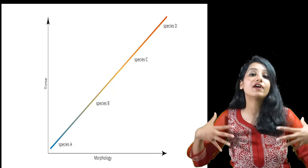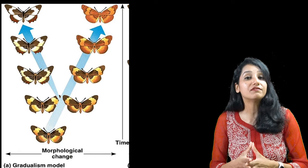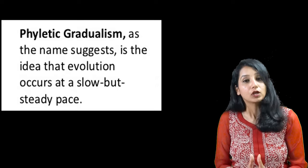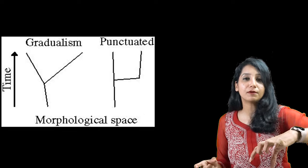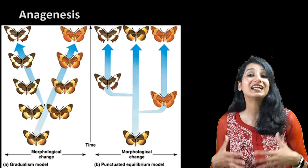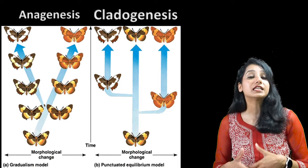Phyletic gradualism tells us that changes come gradually, accumulate over time, and eventually produce a new species. It is a gradual process — this is called anagenesis. In cladogenesis, there is no long period of stasis; instead, a lineage branches and becomes a new species.